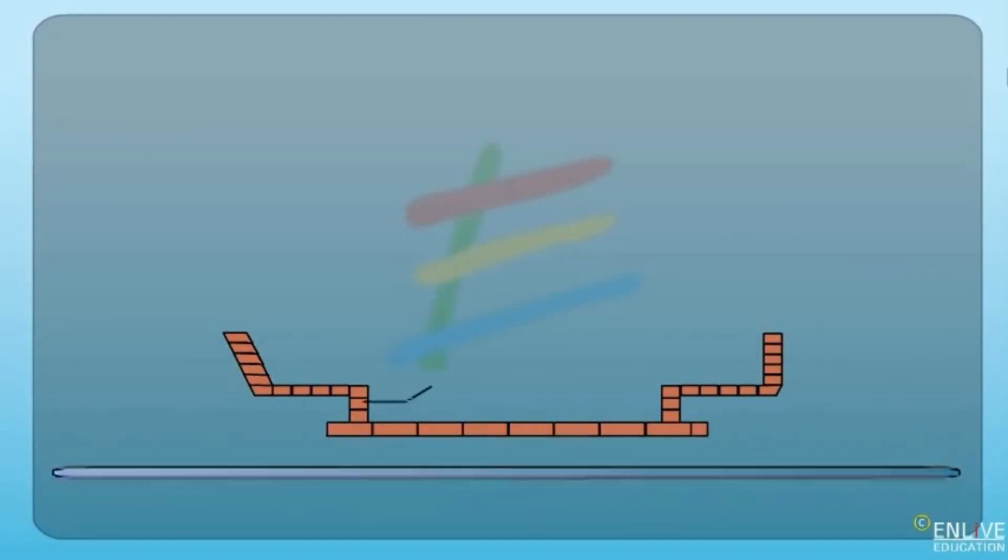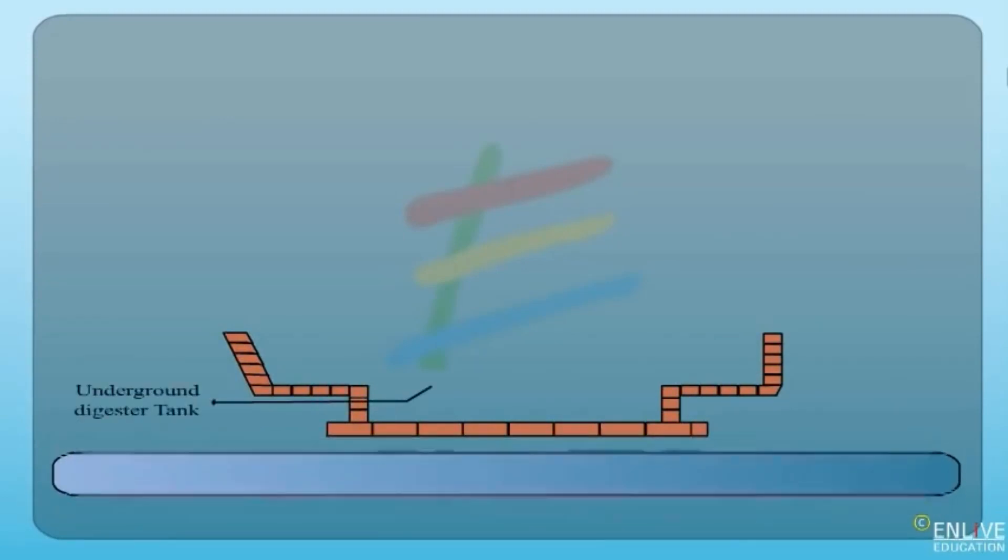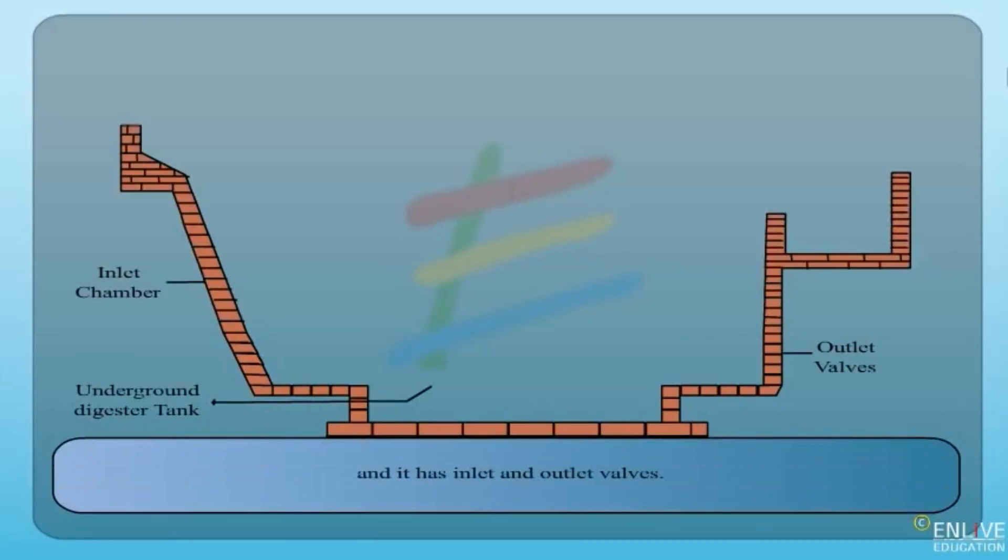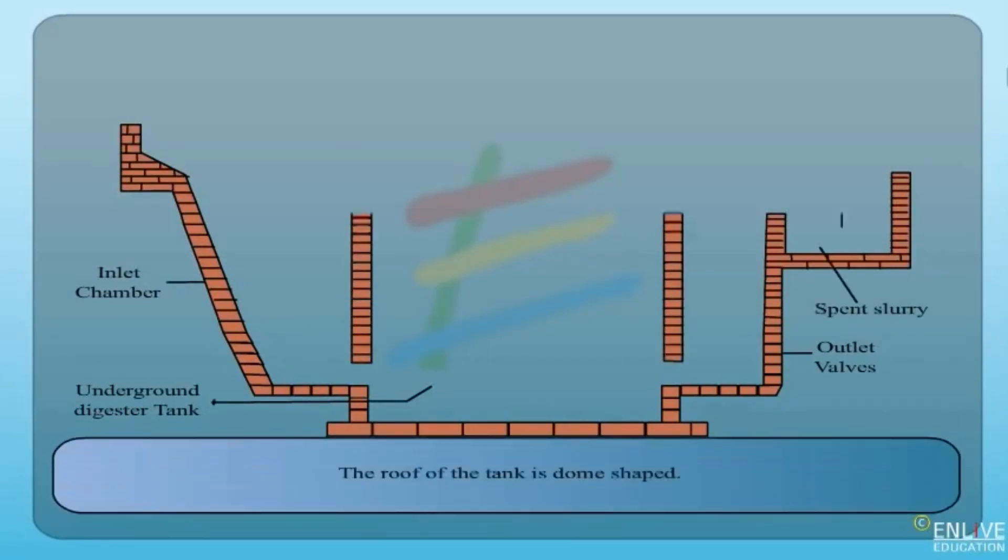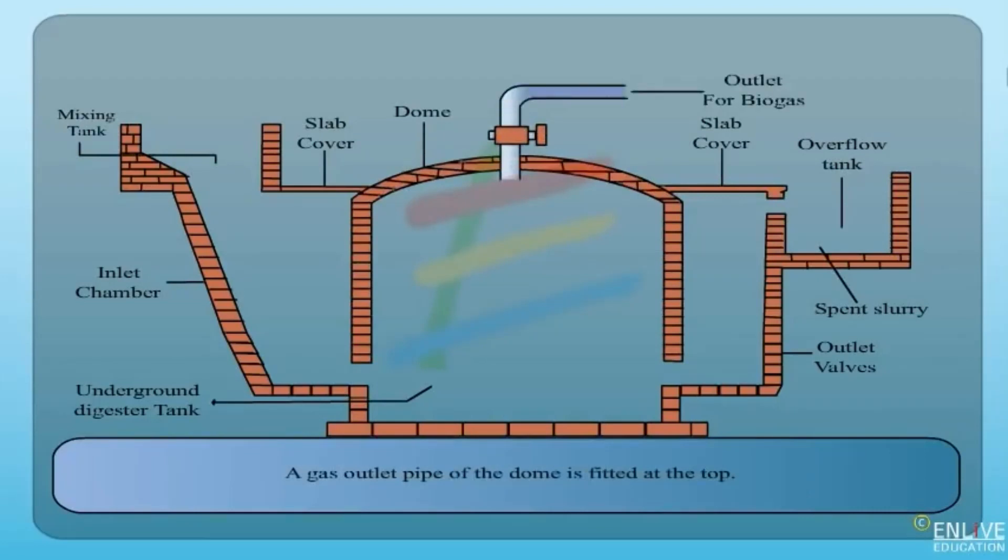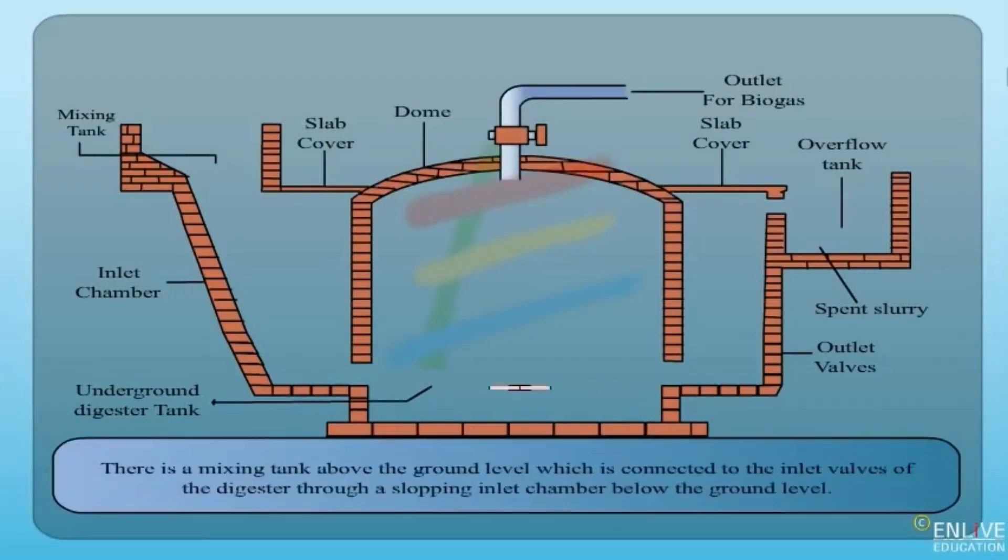Construction - Excavation: Dig a hole in the ground where the digester will be placed. The size of the hole should match the dimensions of the digester's base. Base construction: Lay a concrete foundation for the digester's base. Place rebar within the concrete for reinforcement.